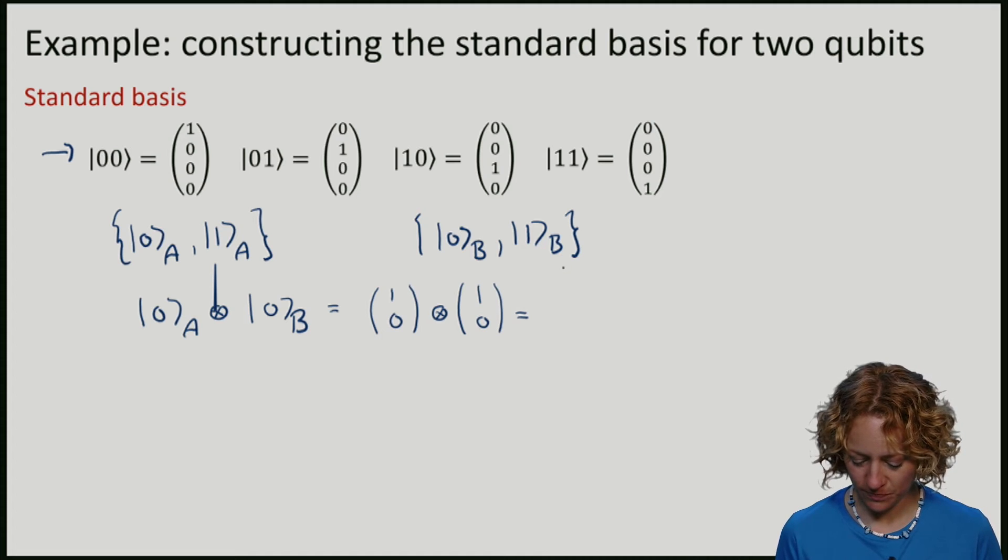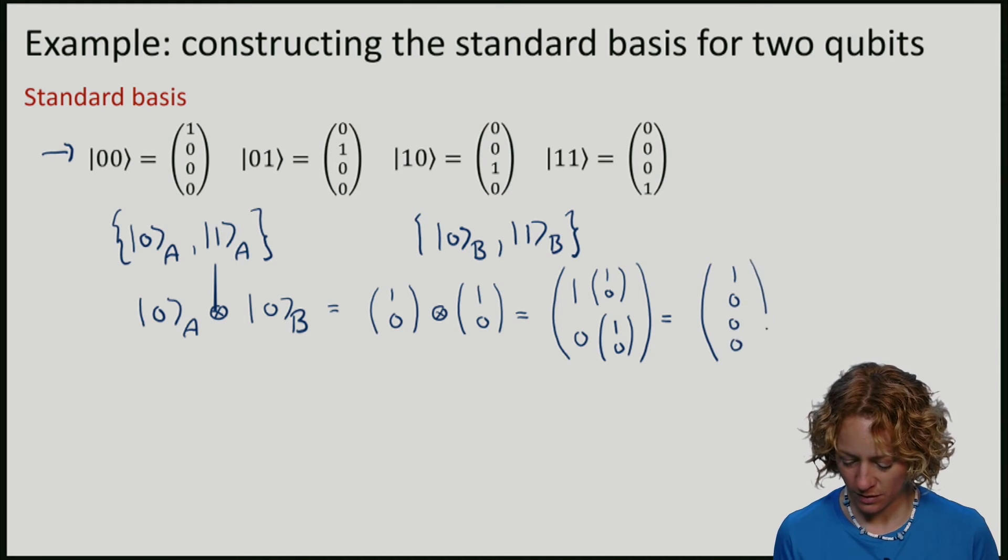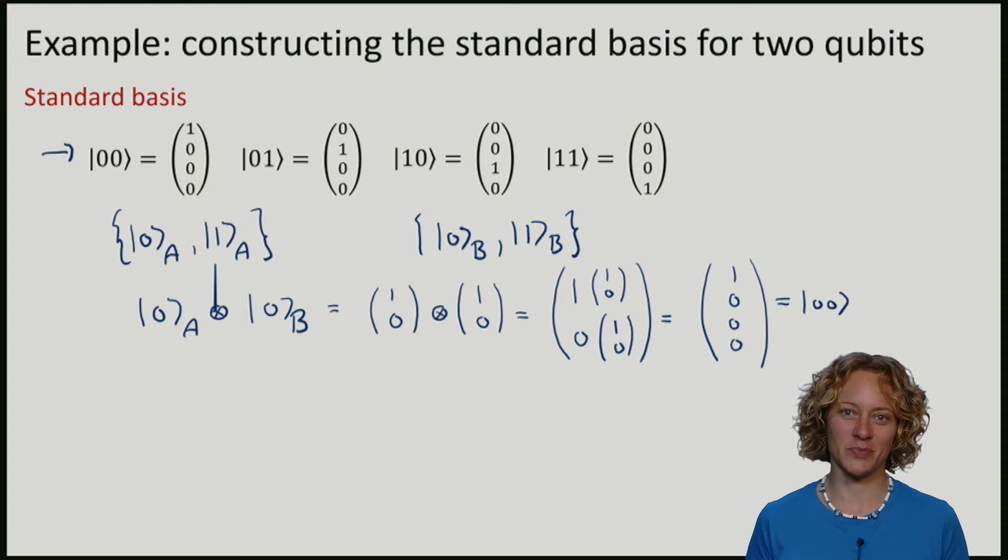So let's apply our rule. I take 1, I take on this vector. I take 0, I take on this vector. So what I get is 1, 0, 0, 0. So you can see that it is exactly the same as the 0, 0 element of the standard basis.